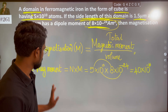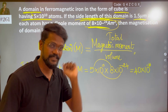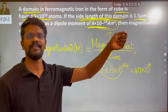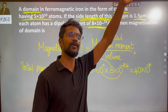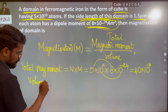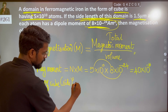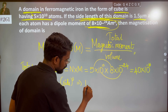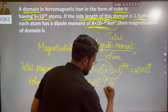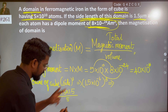Total magnetic moment divided by volume. The cube side is 1.5 micrometer. Volume of cube equals side cubed — 1.5 micrometer cubed.